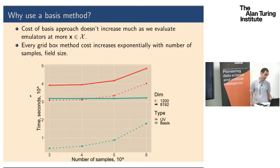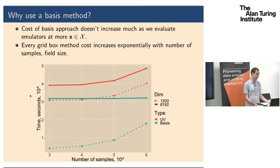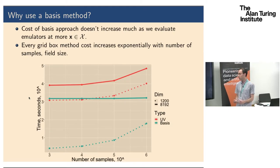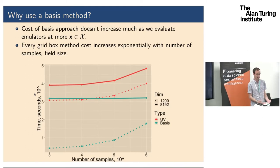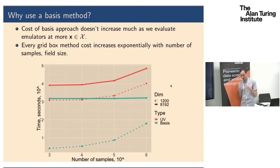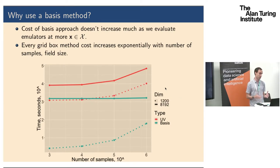For the basis approach, we perhaps have a larger initial cost — we've got to calculate the basis and do some matrix inversions, which can be expensive as the size of the output field increases. But then we get the benefits later: we only have to build a few emulators and evaluate them at millions of points in parameter space. As we add more posterior samples, our cost doesn't really increase too much. Whereas if we were building an emulator for every single point, that takes a lot more time as dimension increases, and the number of posterior evaluations needed increases as we drill down into small regions.